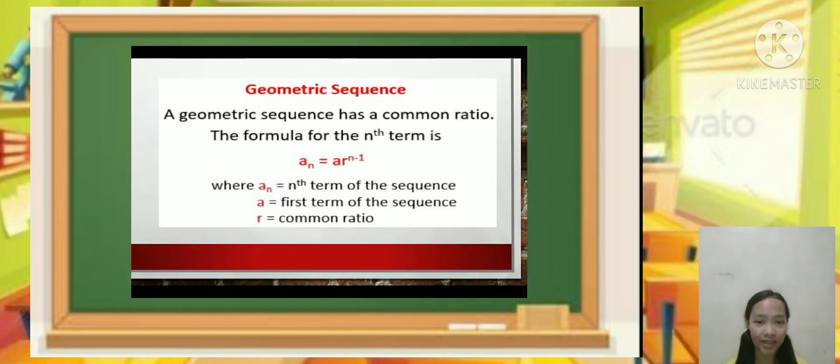A geometric sequence has a common ratio. The formula for the nth term is a sub n equals a times r raised to n minus 1, where a sub n is the nth term of the sequence, a is the first term of the sequence, and r is the common ratio.